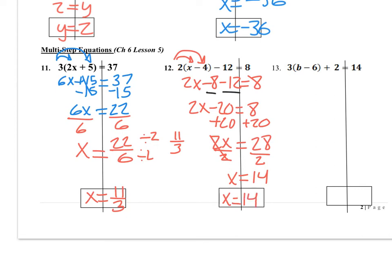Alright, number 13. Again, we have distributing, so start with distributing. 3 times b is 3b, 3 times a negative 6 is a negative 18, and we're still adding 2, and it's all equal to 14.